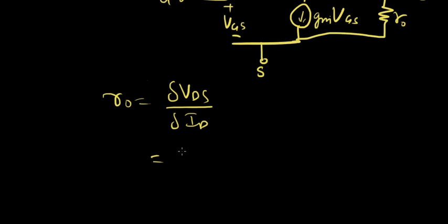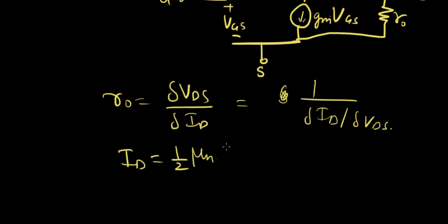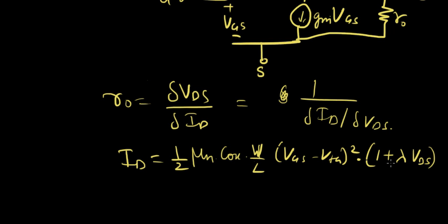So this can also be written as 1 over delta ID over delta VDS. Now, one thing I forgot to mention before when I was working on channel length modulation was the inclusion of channel length modulation in the drain current equation. Drain current equation when you don't include channel length modulation is given by half mu and Cox W over L VGS minus VTH the whole square when the MOSFET is in saturation. When you include channel length modulation, what you're going to have is 1 plus lambda VDS. That's the only term that's going to get added.